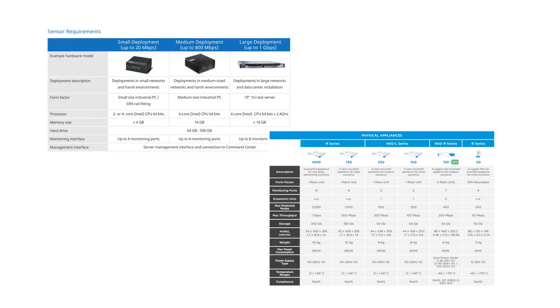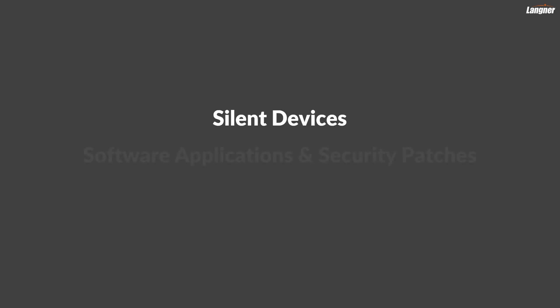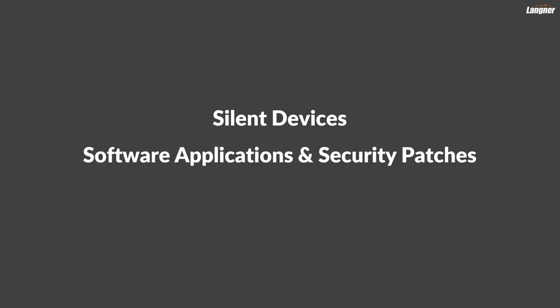Some vendors sell proprietary appliances, while others allow you to pick appropriate hardware of your choice. In any case, this technology requires that the network sensors digest all network traffic, which is usually accommodated by port mirroring in every network. There are also technical limitations to passive scanning: silent devices will not be detected, and software applications and security patches won't be detected with any reasonable level of accuracy — for example, security patches you need to know about for vulnerability management. Additionally, network topology at layers 1 and 2 might be hidden from your view.